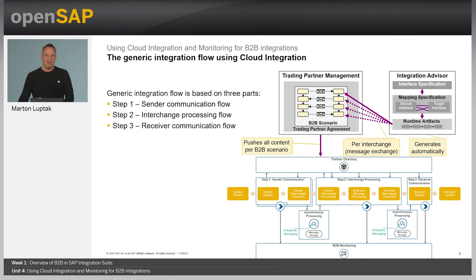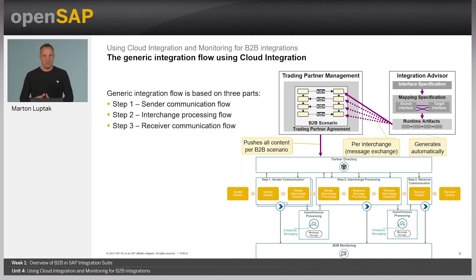Step three is the receiver communication flow, where we send the information to the receiver via the defined adapter. The adapter types are also configurable in trading partner management. We will see in later sessions and in week two how you can define and maintain the specific adapter types and what parameters you need to consider to process those.